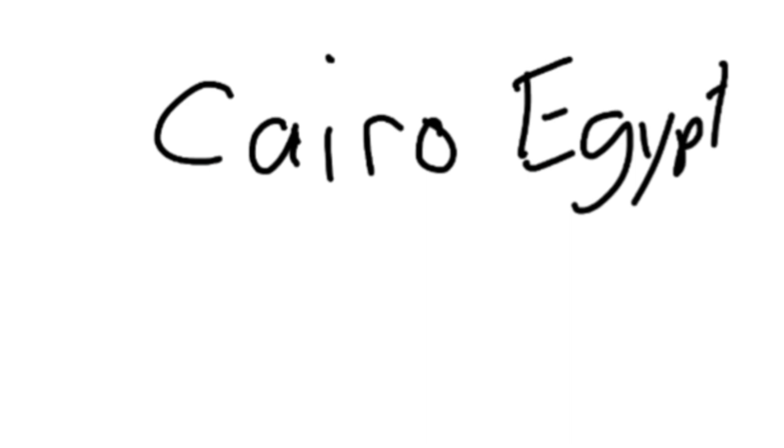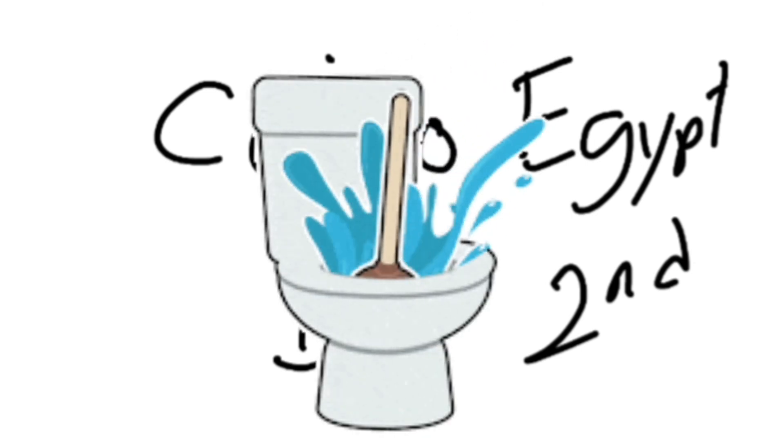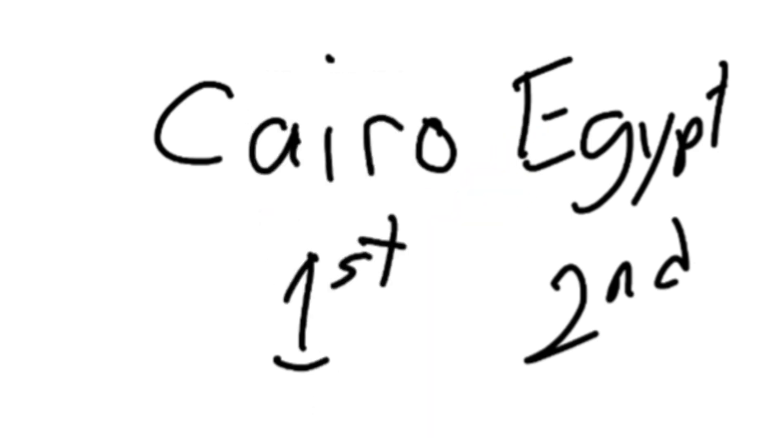And don't forget, in English, we say the city first and the country second. Cairo, Egypt. Taipei, Taiwan. Just like names. In English, we say the first name first and then the family name last. That's why my name is John Toilet. You don't call me Toilet John. But in Chinese, we say your family name first. It's a little different.